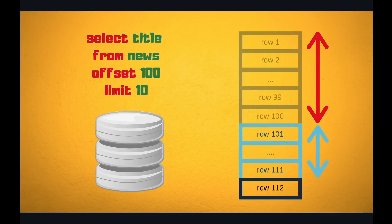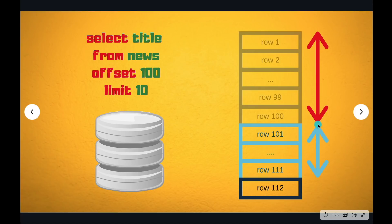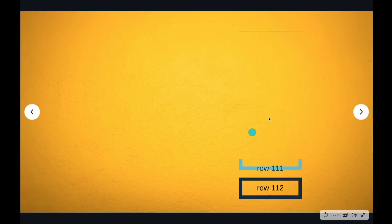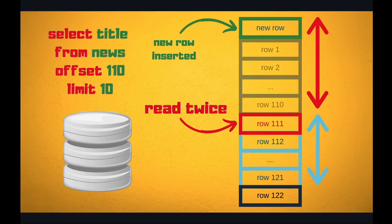OFFSET by design means fetch and drop the first X number of rows. In this case the database will fetch the first 110 rows and physically drop the first 100, leaving the LIMIT of 10 rows the user will actually see. As the offset increases, the database is doing more and more work, which makes the operation extremely expensive.